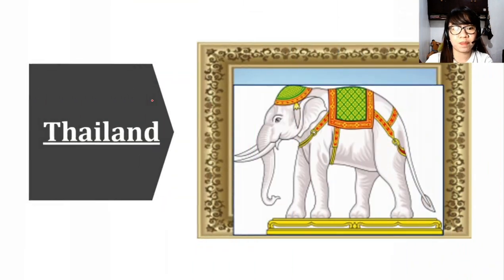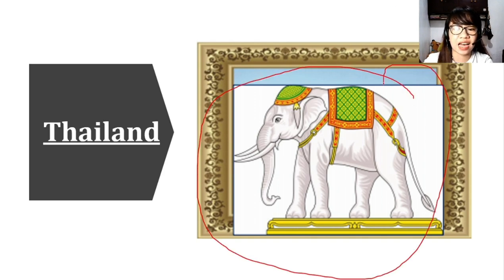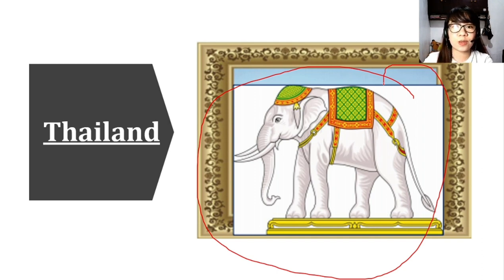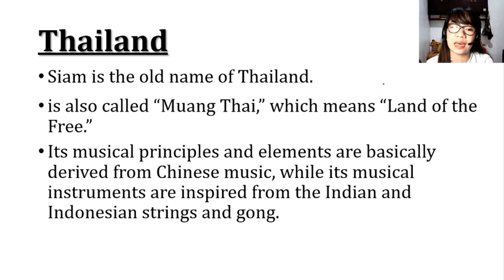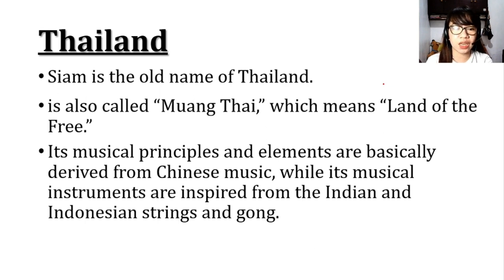Let's start with the first country: Thailand. If you can see here, there is an elephant. The elephant is actually the official national animal of Thailand, and long ago elephants were used in warfare, so for the Thai people elephants are really important animals. Thailand's old name is Siam, and it is also called Muang Thai, which means Land of the Free, because Thailand was never under Western colonial power.